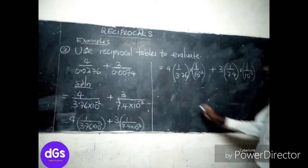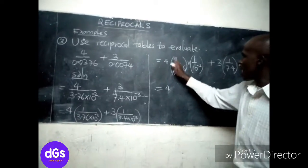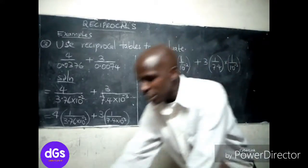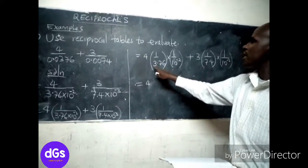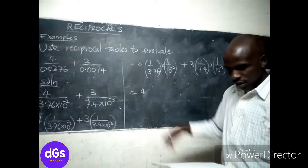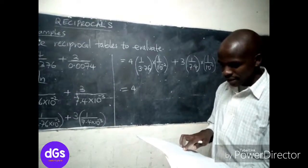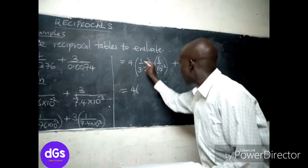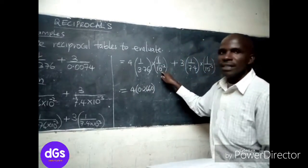Very good. Now from there, I take this 4, then this one I get directly from the reciprocal tables. For 1 over 3.76, I go to the reciprocal tables at 3.7 and move to column 6, getting 0.2660. So this one becomes 0.2660.